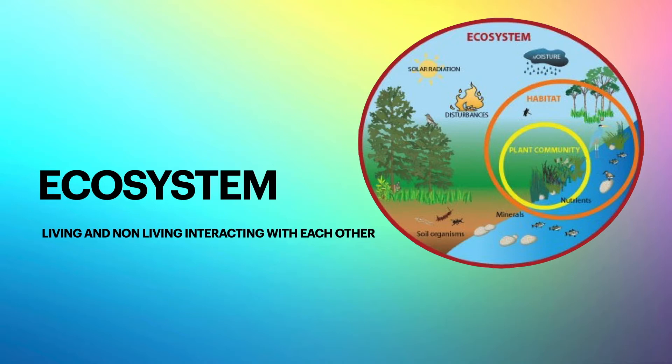Ecosystems. Looking at the living and non-living things interacting with each other in a given area. You can see from our little diagram that there are various parts of an ecosystem. They can also range in size from a puddle to an entire biome that spans a continent.